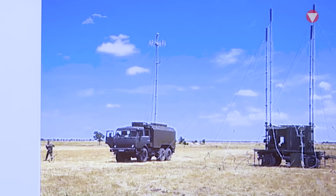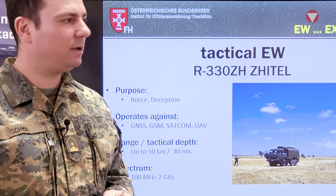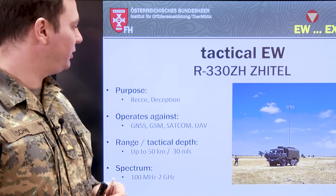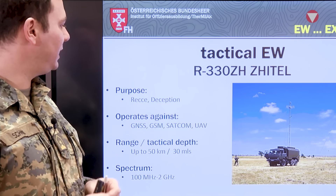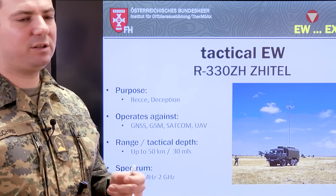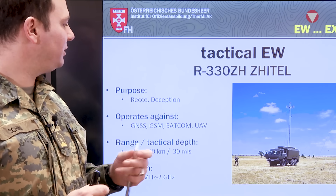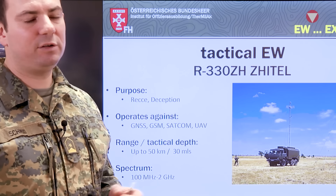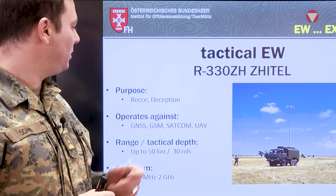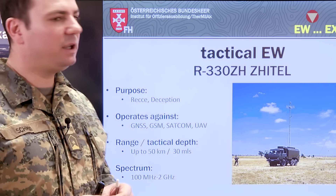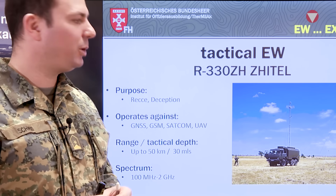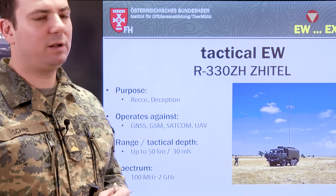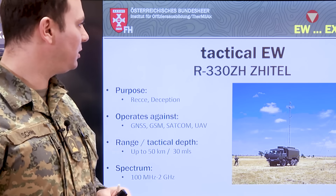The ZITTL system's purpose is deception and reconnaissance like the other systems. It operates mainly against satellites such as GNSS systems, GSM, satellite communication, and UAVs. The range is up to 50 kilometers — around 30 miles — and it operates in the spectrum of 100 MHz up to 2 GHz.